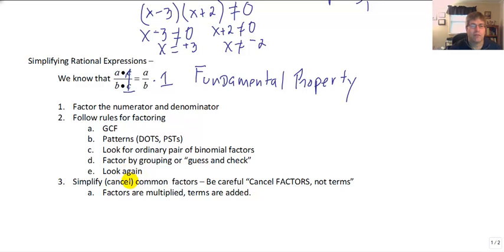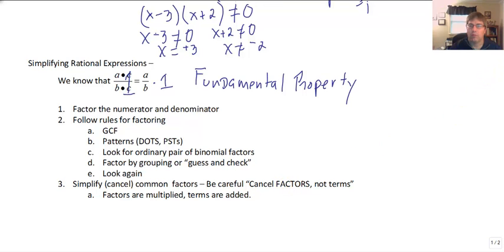And finally, in our simplifying rational expressions process, we have to be careful to simplify or cancel only common factors. Factors are multiplied. Factors are binomials, monomials that are multiplied, while terms are expressions that are added and subtracted. So we have to be careful to cancel factors and not terms.